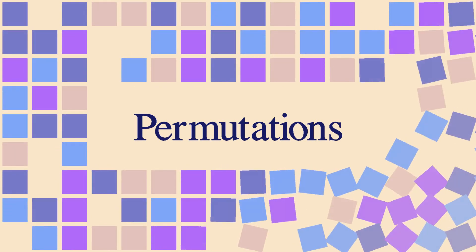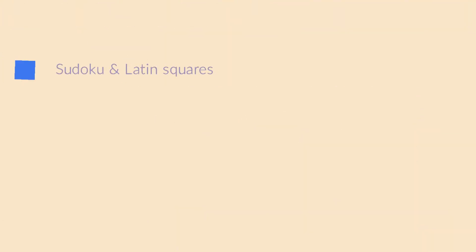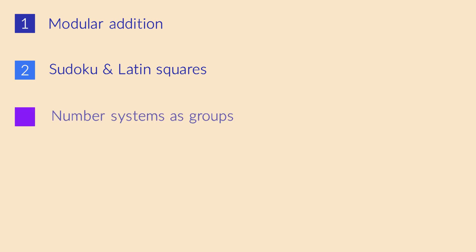In this video, we will discover a very important property of groups, one that you may have already noticed in the Cayley tables we looked at earlier. To show this property on a concrete example, we're going to explore modular addition first. This is a simple number system with a funky kind of addition. Once we're on that subject, we will also briefly look at other number systems to find out which ones can be turned into groups and which ones cannot.